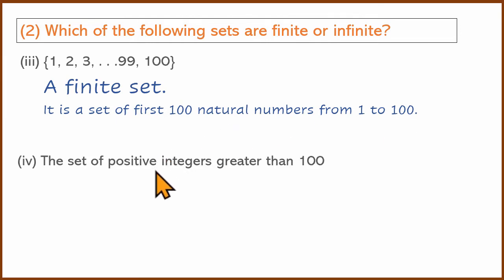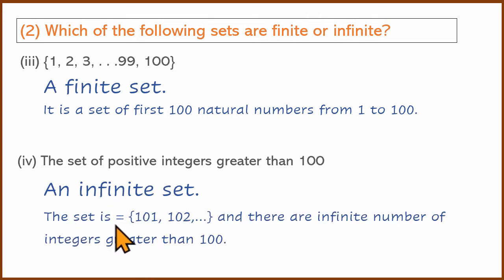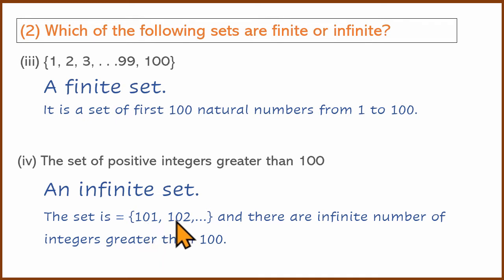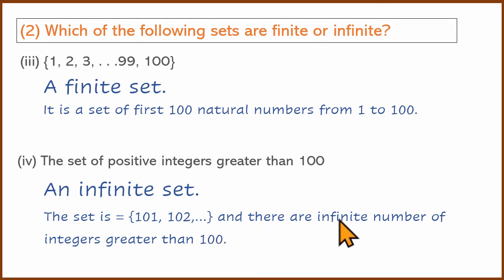Set of positive integers greater than 100 — this is an infinite set. This set is: 101, 102, 103 — this is the set of positive integers greater than 100. 101 is the first positive integer greater than 100, 102 is the second, 103 is the third. So this set has no end — it extends to positive infinity. That is an infinite number of integers — that is the infinite set.